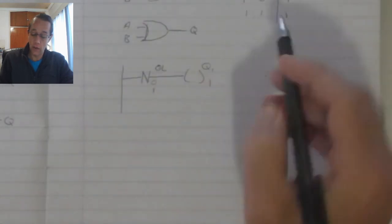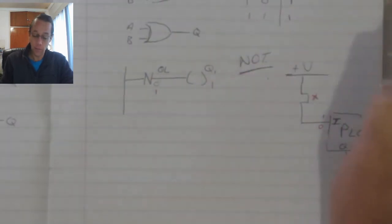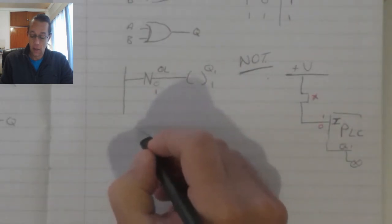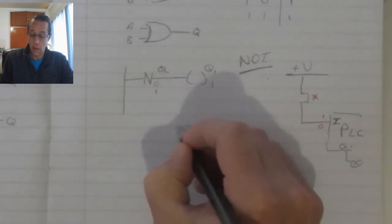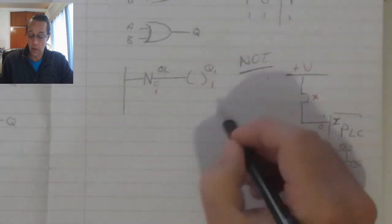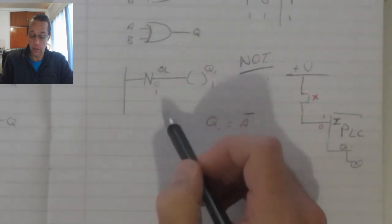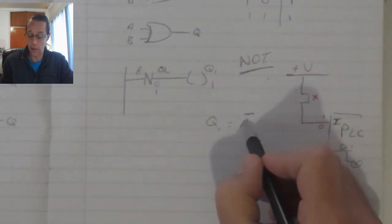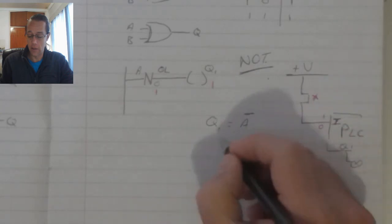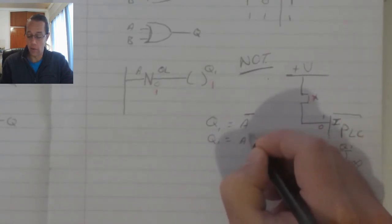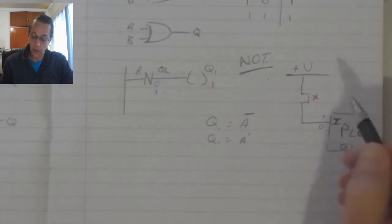This function is called a NOT or an invert function. The expression Q1 is equal to NOT A. If that's my A input, we represent it like that. Sometimes, it can be represented with an inverted comma like that.